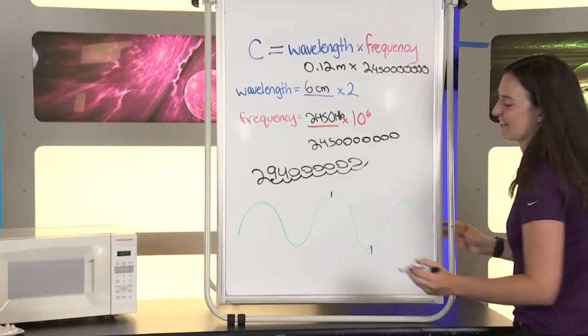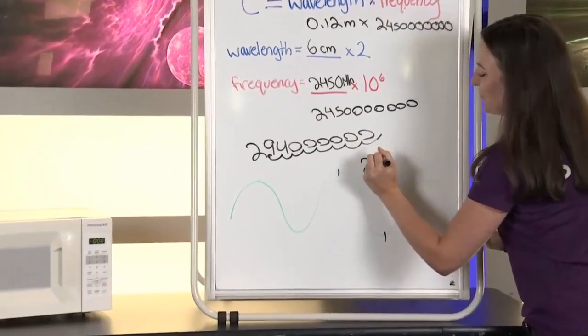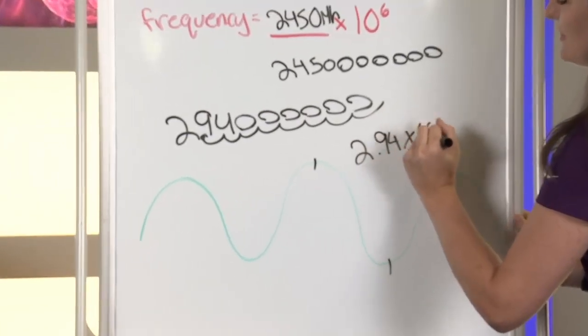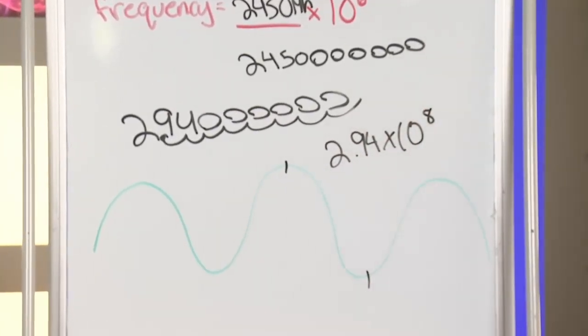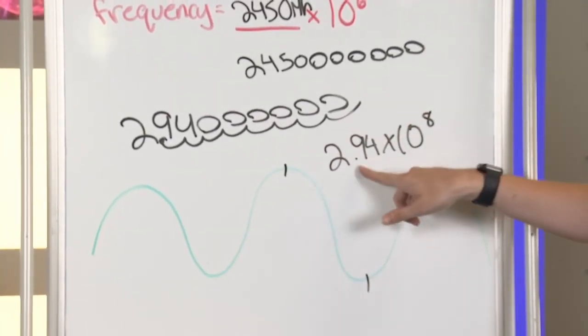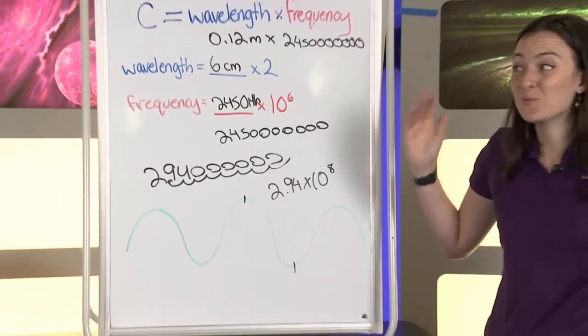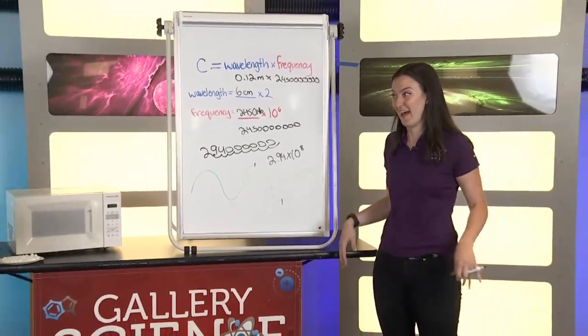We're going to do our significant figures. Awesome. So, we got 2.94 times 10 to the eighth. And the measured speed of light is 2.99 times 10 to the eighth meters per second. So, that is really close for marshmallow math.